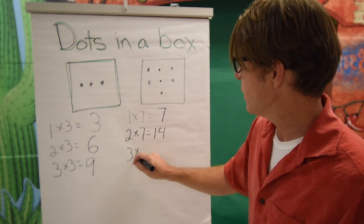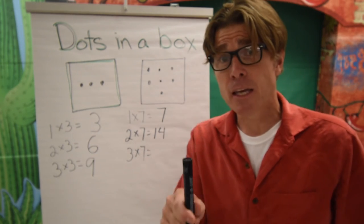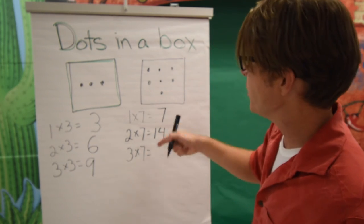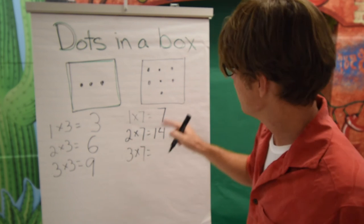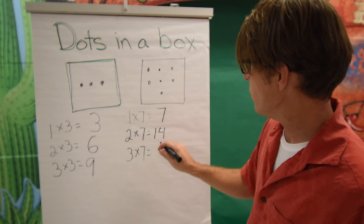Next one, three times seven. Again, have your students say fourteen, fourteen, fifteen, sixteen, seventeen, eighteen, nineteen, twenty, twenty-one.